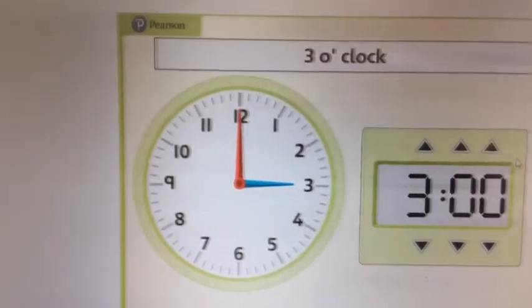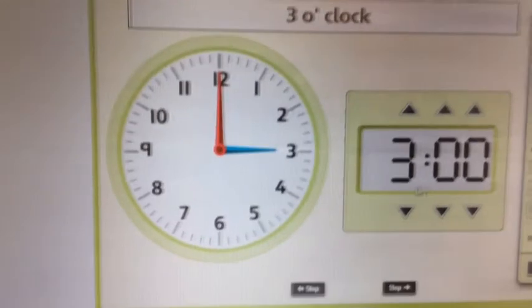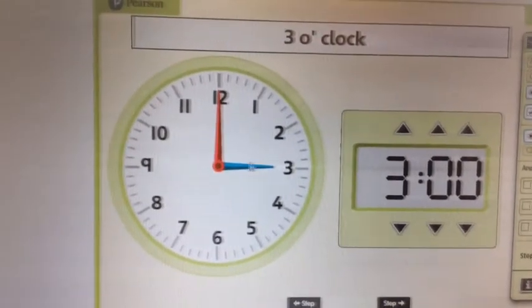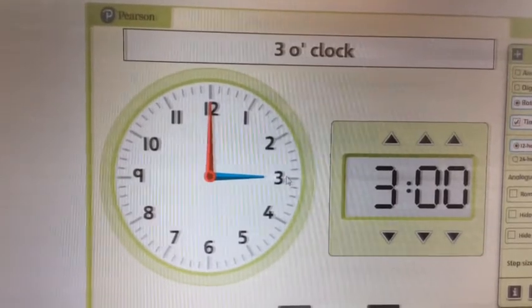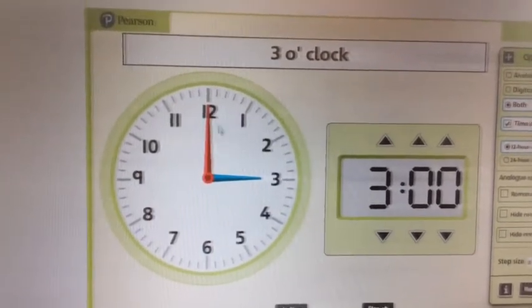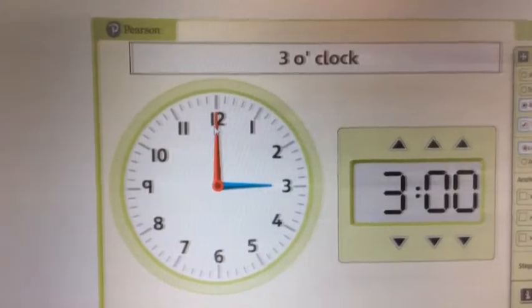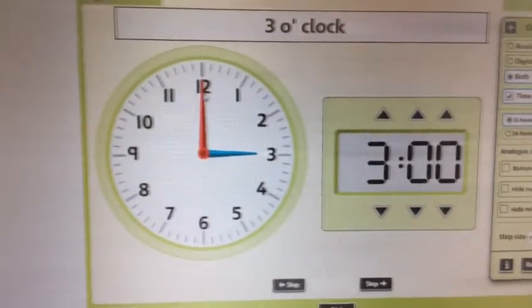Some quick revision on time now, before we move on and make it a bit harder. You should be really good at o'clock by now. The smaller hour hand, remember, it's telling you what o'clock it is. The big hand points to the 12, top of the clock, telling you it's o'clock.